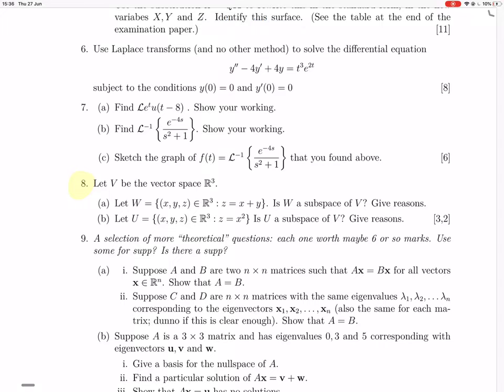Okay, so question 8. We have vector space V, V is the vector space R3, then we have this W and this U, and they're asking us to see if they're subspaces. So this first one, this W, W probably is going to be because that looks like a linear equation, and U is not because that's not an equation.